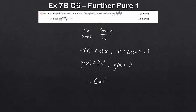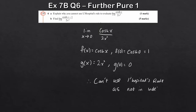Therefore, we can't use L'Hôpital's rule, as the expression is not in indeterminate form. L'Hôpital's rule requires the form zero over zero, but here we have one over zero, so it cannot be applied. That's why part b makes a small correction to the expression.